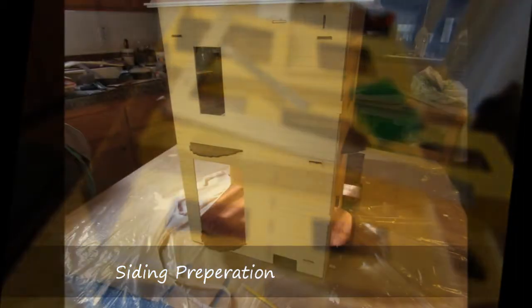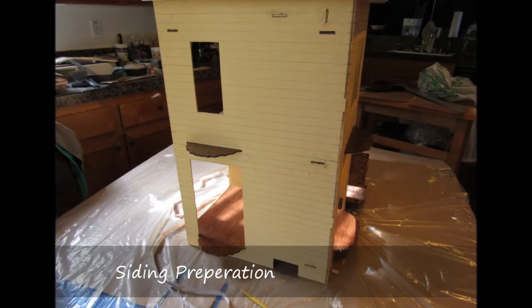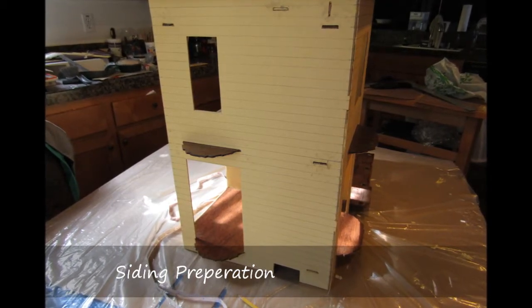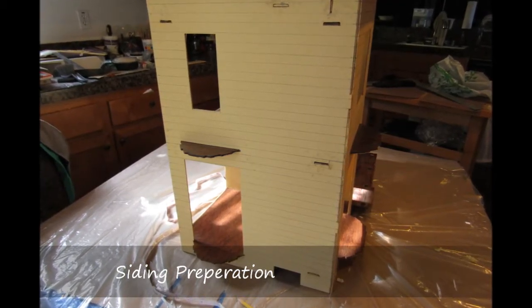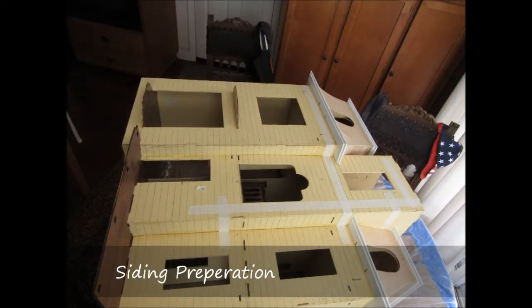I started with the underside of the first floor as the base of the siding and worked my way up the house. One thing to note is that using this strategy will cause the bottom siding to have a smaller reveal than the majority of the body.